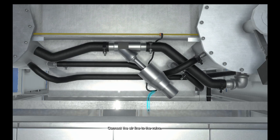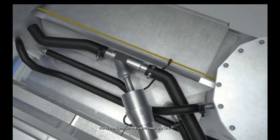Connect the air line to the valve. Connect the ASI power cable. Verify the lights on the valve head are on.